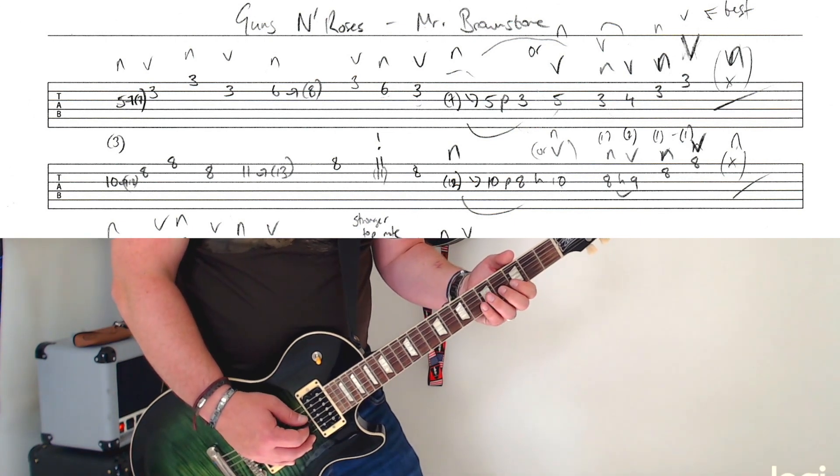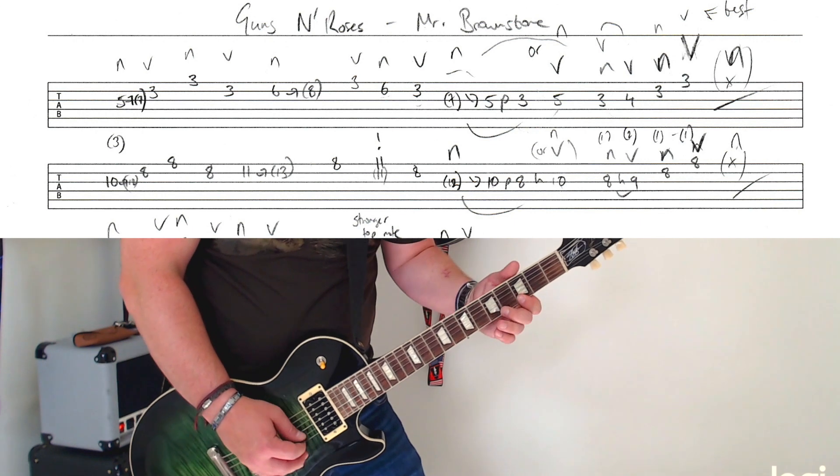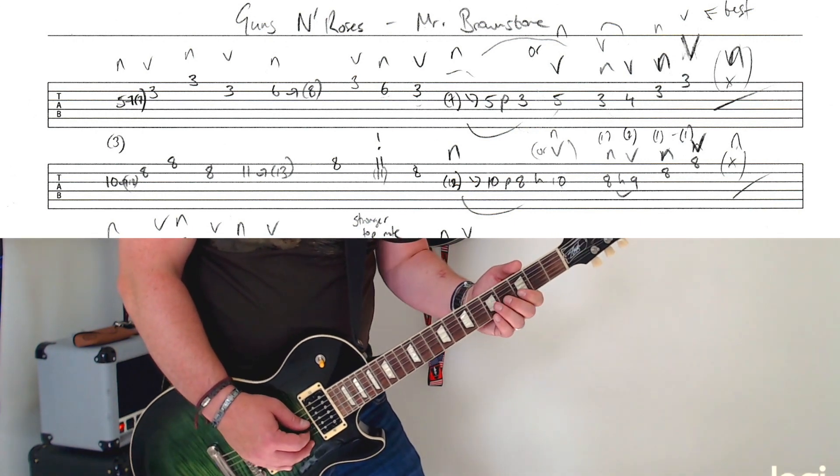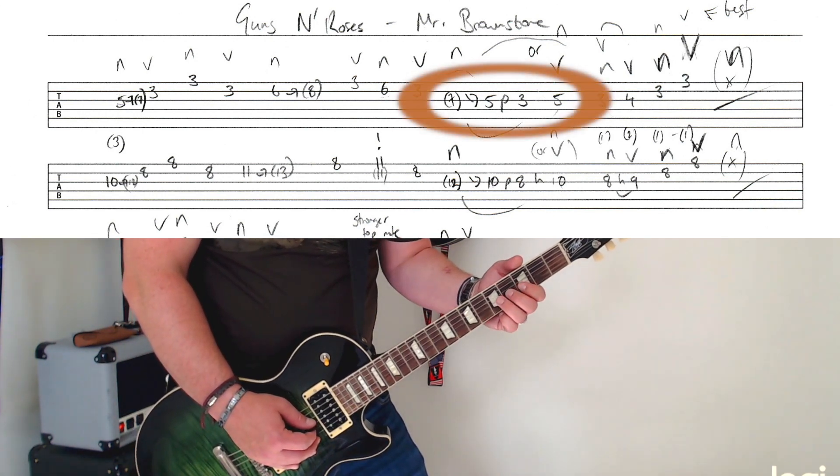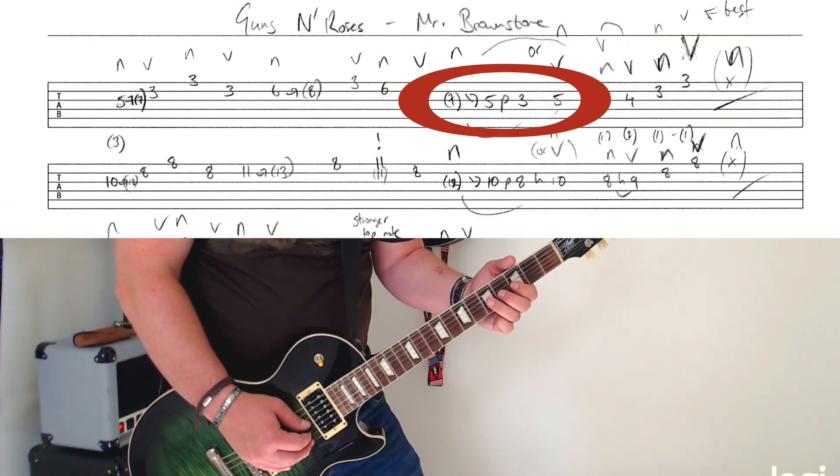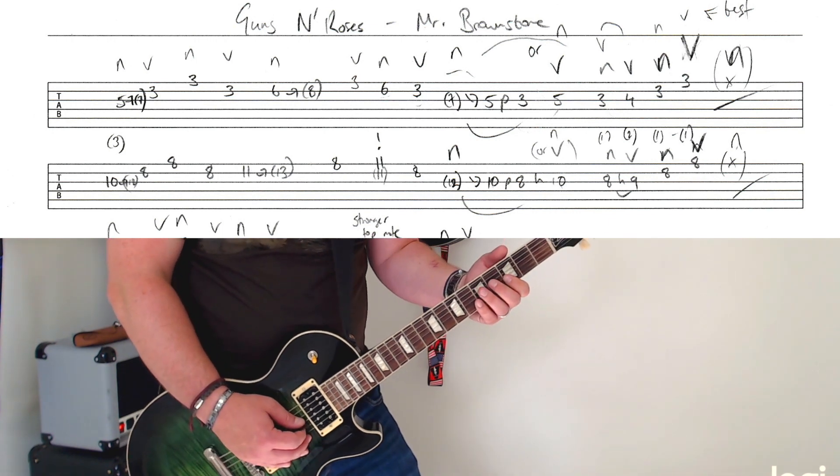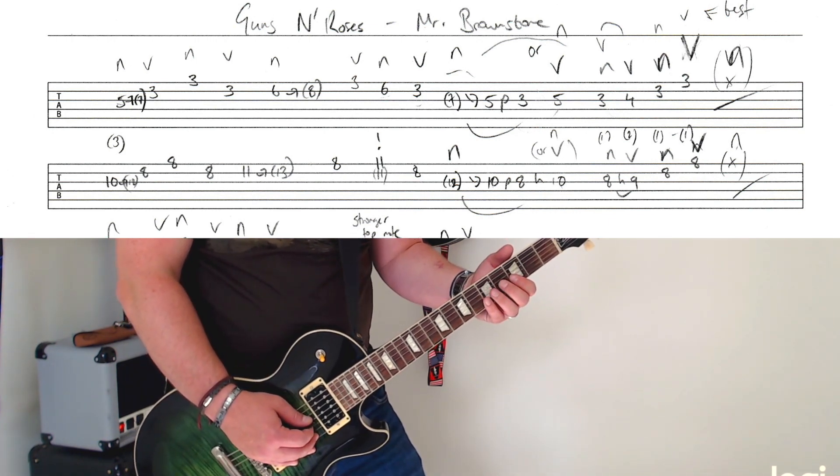So that's one picking variant, or the one which I actually would recommend, which is above that in the tab. Then you've got this bent down note with a down. Then you play this 5th with a down. Hammer on here. That's what I've seen Slash do live quite a few times and I'd recommend that.